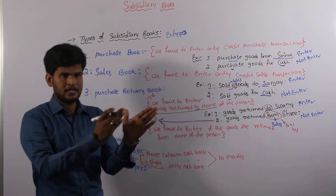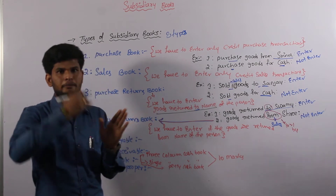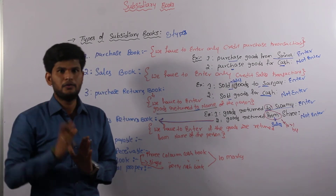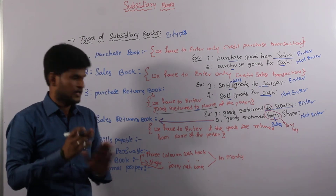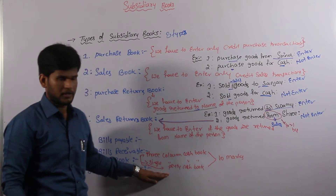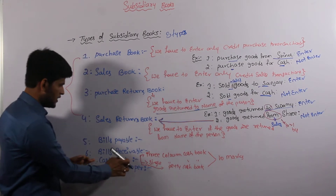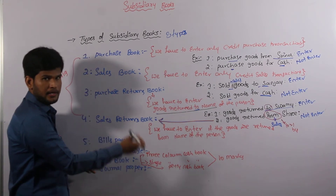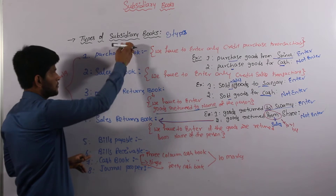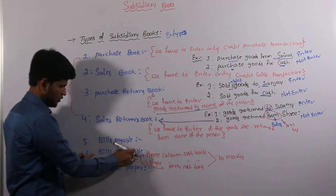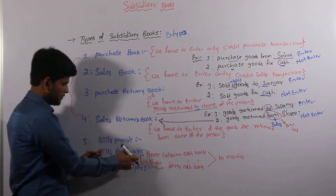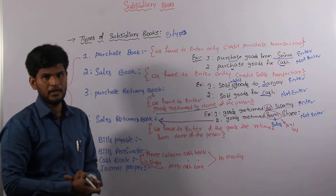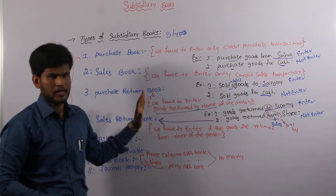We have to identify the transaction and then prepare the particular columns for each individual transaction — that we will learn in our next chapter. Cash book has a separate chapter, and we are satisfying the cash book transactions into our subsidiary book transactions.